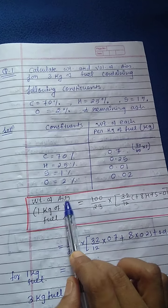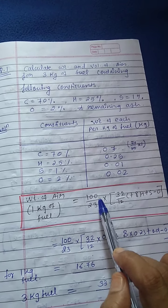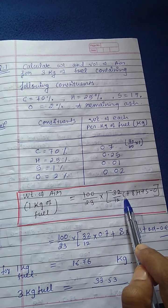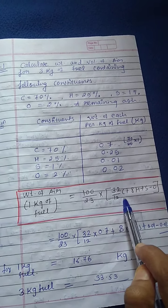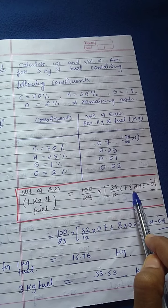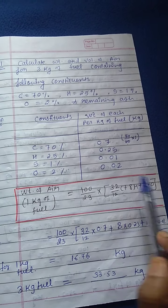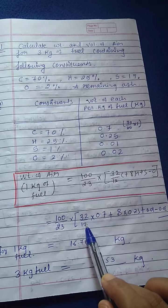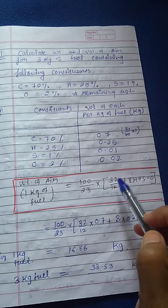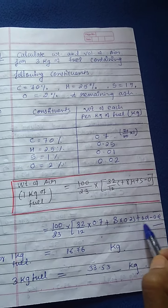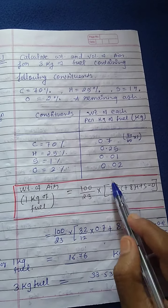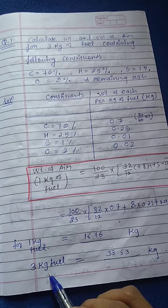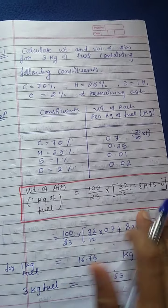Now apply the weight of air formula: weight of air for 1 kg of fuel = 100/23 × (32/12 × C + 8H + S − O). Here C, H, S, O are amounts in kg, not percentages. Substituting: C = 0.7, H = 0.25, S = 0.01, O = 0.02. Weight of air for 1 kg of fuel = 16.76 kg. Since we need air for 3 kg of fuel, multiply by 3.